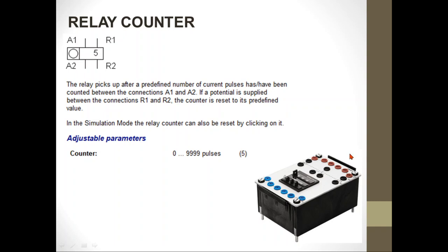After the preset count, the operator can manually press the reset button and the count will reset to zero. After the counter has counted — say, five times — the auxiliary contacts change position. In order for the relay counter to be used again, the preset count must be reset to the starting value, which is zero. Without resetting, the relay counter will not be able to function.